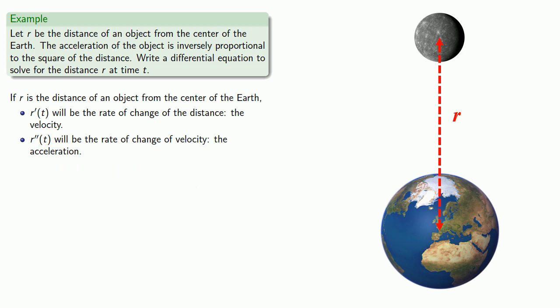And our assumption is that the acceleration is inversely proportional to the square of the distance. And so we have the rate of change of velocity, the acceleration, is inversely proportional to the square of the distance. And so we can write that this way, where k is a constant of proportionality.